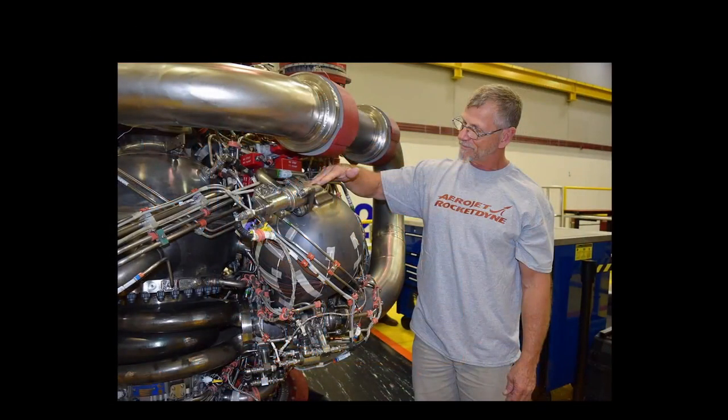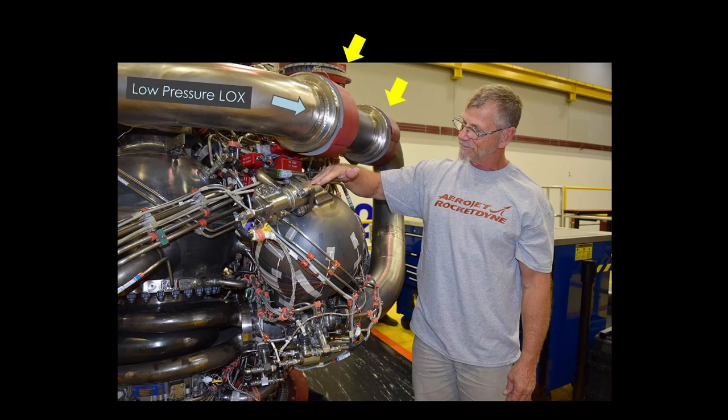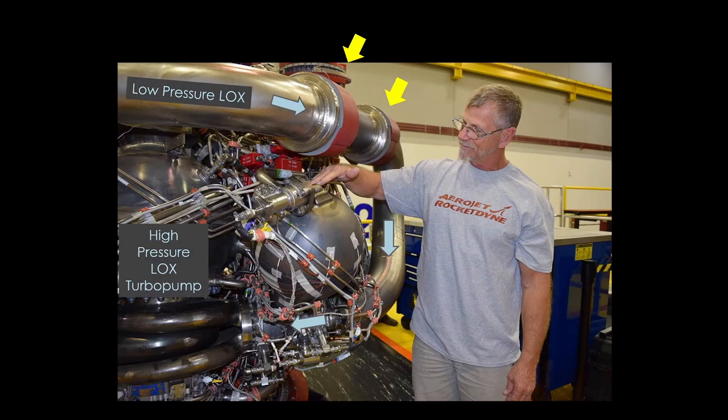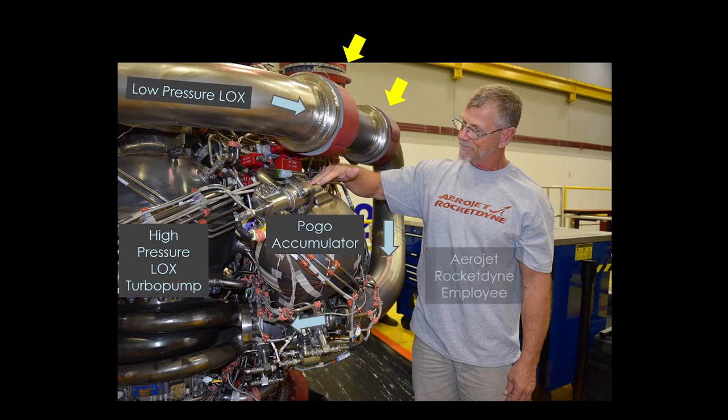Here we have a wonderful picture of the system. At the top, we have the low-pressure liquid oxygen coming from the low-pressure turbopump. It goes through two bellows that allow the engine to gimbal, heads down, and turns to head towards the inlet of the high-pressure liquid oxygen turbopump. Directly before the input to the turbopump is the pogo accumulator, as indicated by the helpful Aerojet Rocketdyne employee. Note that the accumulator is as close as possible to the high-pressure turbopump. With this system, Shuttle did not have pogo issues.